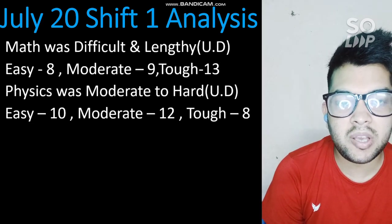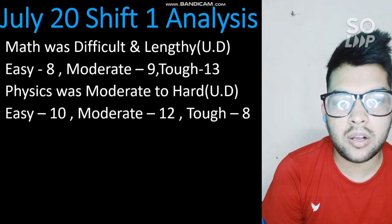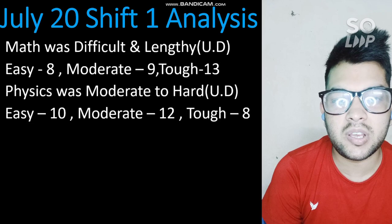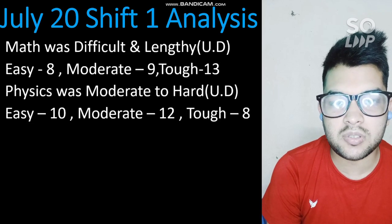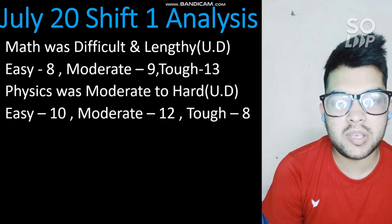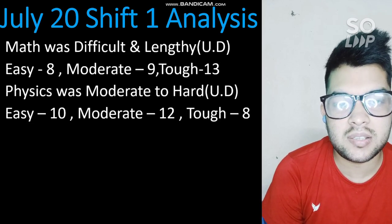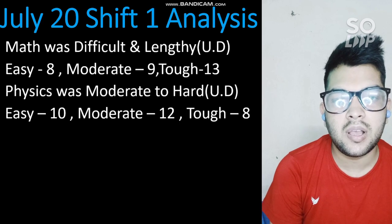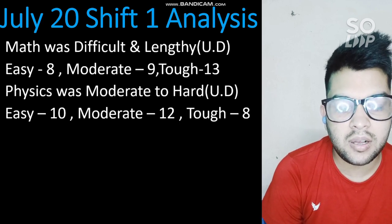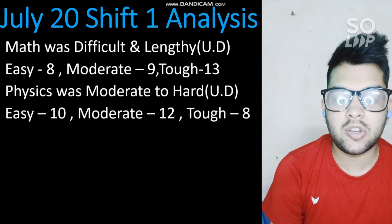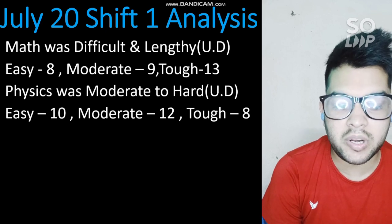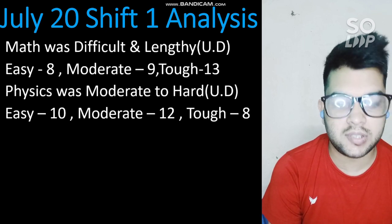The last two chapters of the Class 12 syllabus — semiconductors and communication systems — will also give you easy questions. The topics with more questions in this shift were thermodynamics, current electricity, and alternating current. The overall difficulty of the Physics paper was moderate to hard.